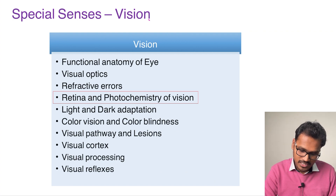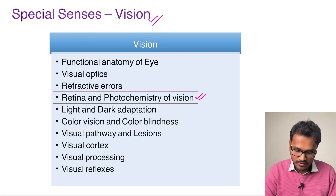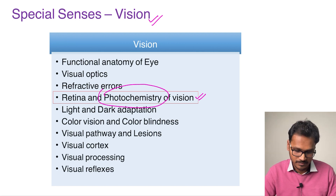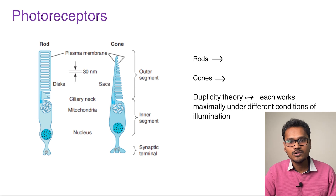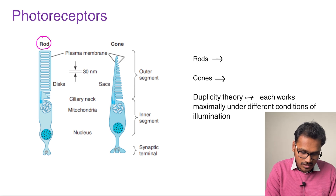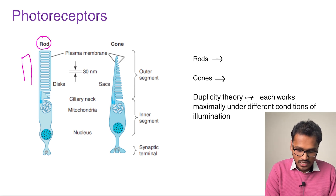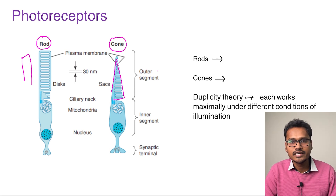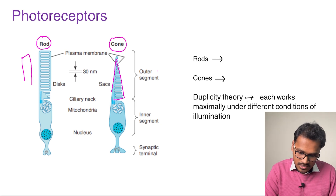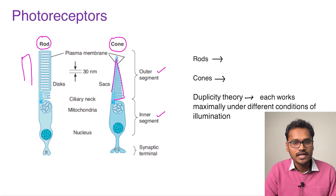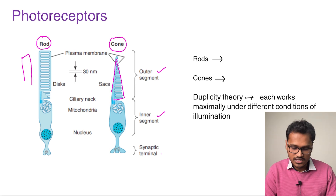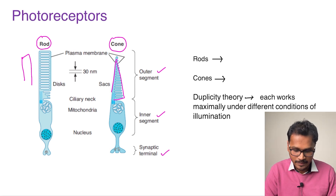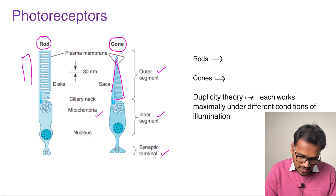We are discussing special sensors — vision — under which the retina and photochemistry fall. There are primarily two important types of photoreceptors: rods, named for their rod shape, and cones, named for their conical shape. As seen in the figure, each has two important segments — an outer segment and an inner segment — and gives impulses to the bipolar cells via the synaptic terminal. The inner segment contains mitochondria for energy production and the nucleus.